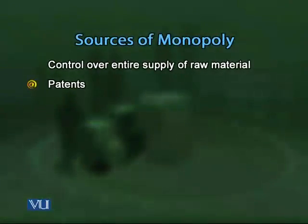The second source is patents. If you apply for a patent, the government grants you patent rights and no one can imitate that product or use that production process. It precludes all other firms in the market from using that production process or imitating the product, and therefore gives rise to a monopoly.